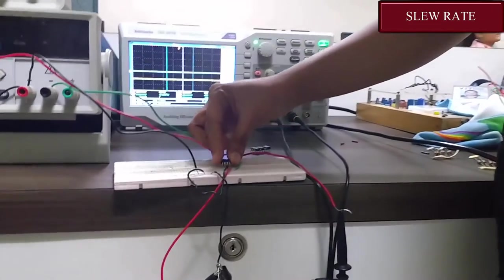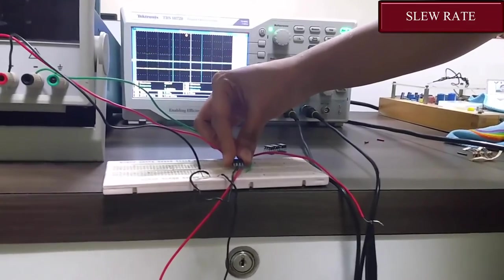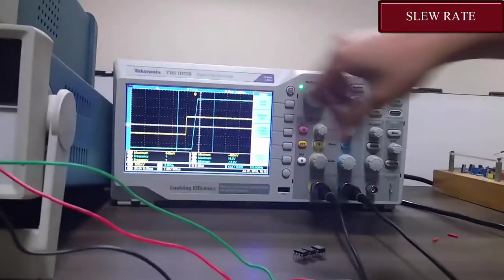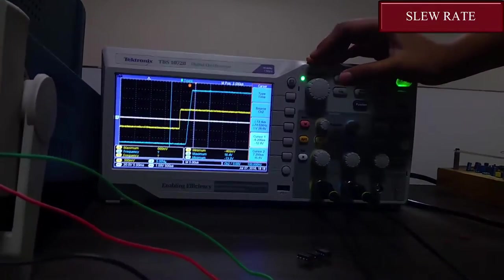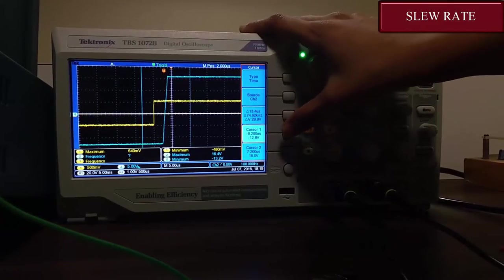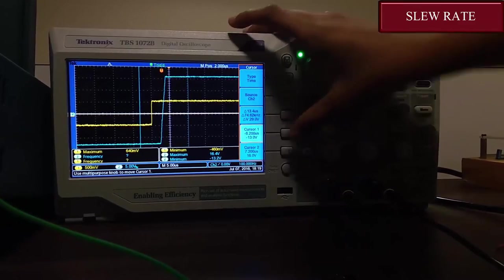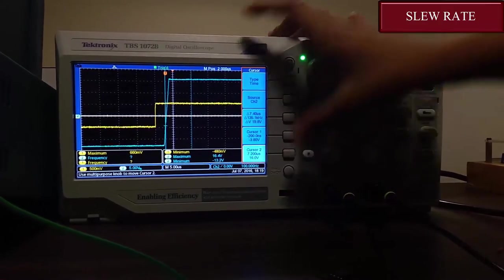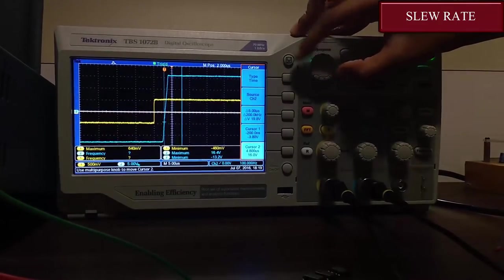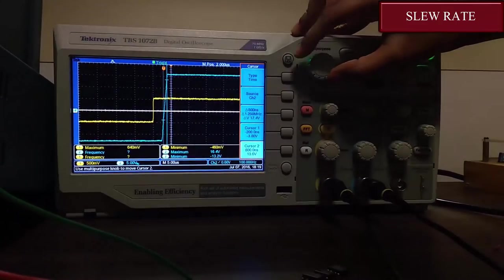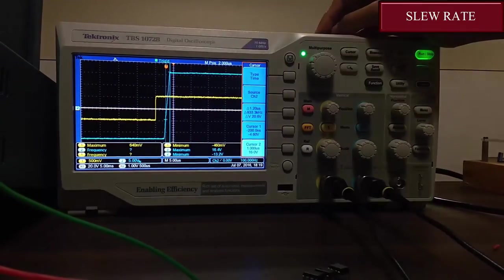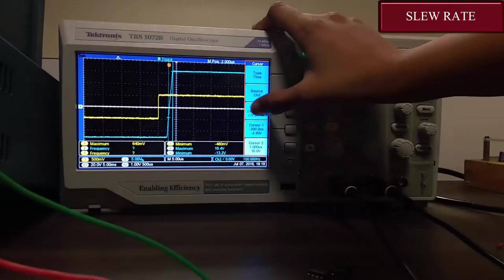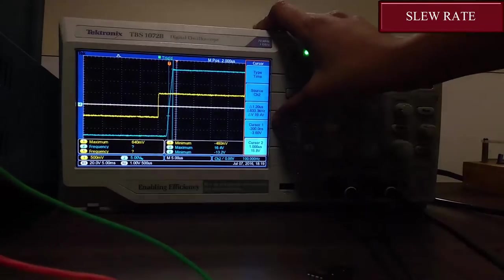Now here let's observe the slew rate. I am shifting cursor 1 here and cursor 2 here. Here the change in voltage is 20.4 volts and that in time is 1.2 microseconds.